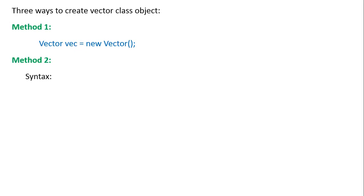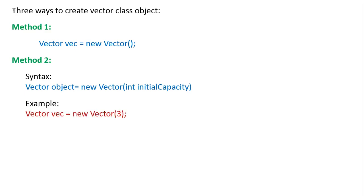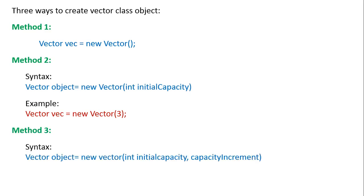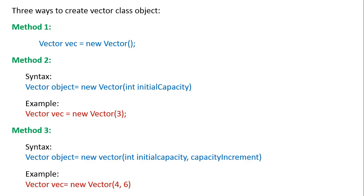The second method creates a Vector object with a specified initial capacity — for example, an initial capacity of 3. The third method specifies both initial capacity and capacity increment. For example, creating a Vector with initial capacity 4 and capacity increment 6: when we try to insert the 5th element, the size becomes 10 (4 plus 6). When we try to insert the 11th element, it becomes 16 (10 plus 6).